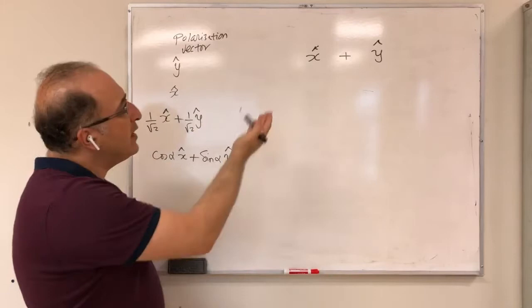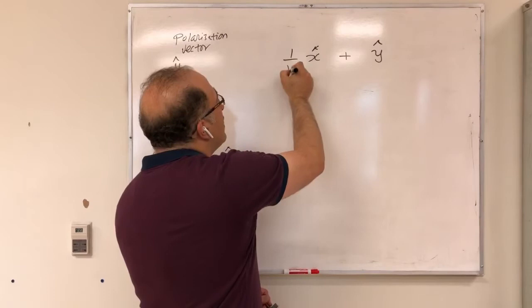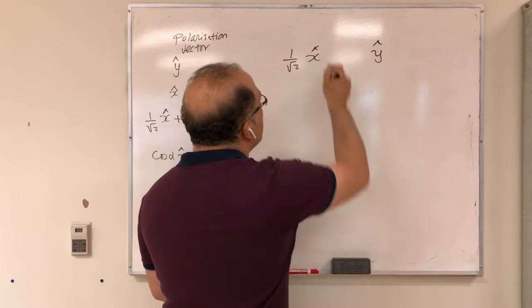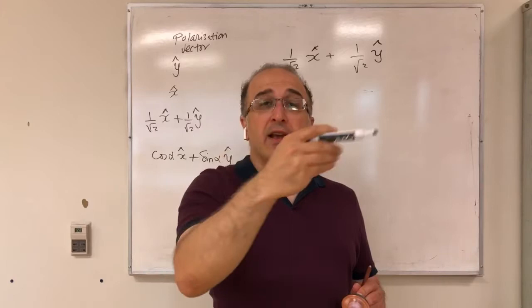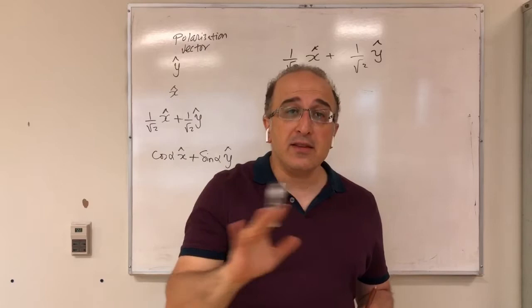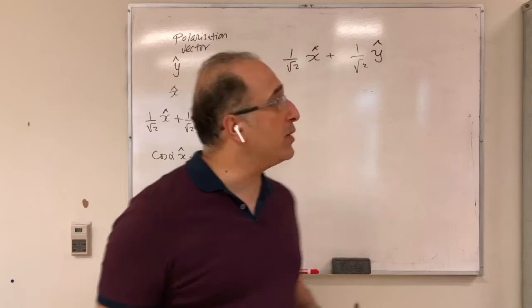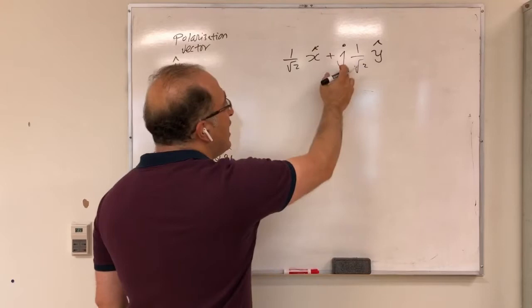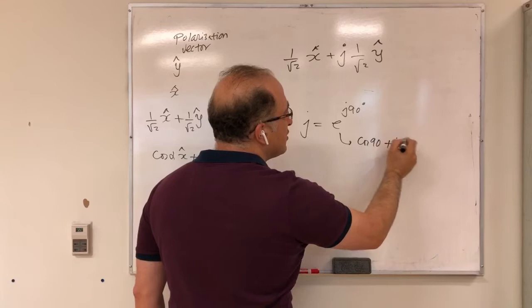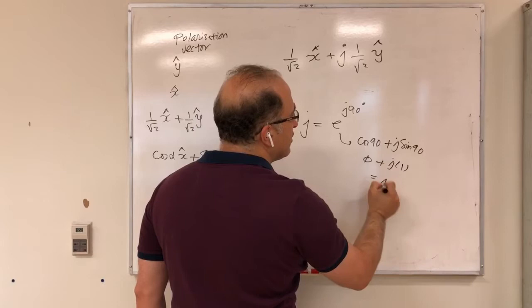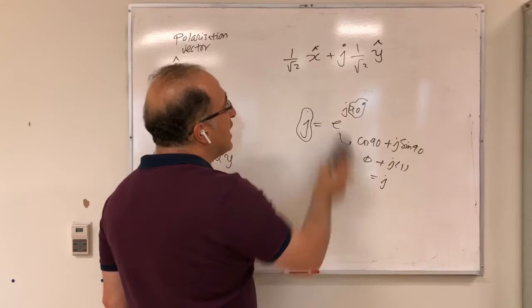Again, similar to before, x-hat plus y-hat is not a unit vector, so we divide by square root of 2. But if I keep it like that without the phase difference, this is the same as linearly polarized. To make it rotate, we need a 90-degree phase difference between the x and y components, which is why we have a j here. Recall that j equals e^(j90°) = cos90 + j·sin90 = j. So having a j represents a 90-degree phase difference.